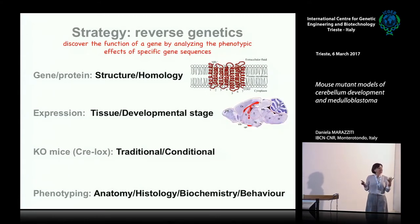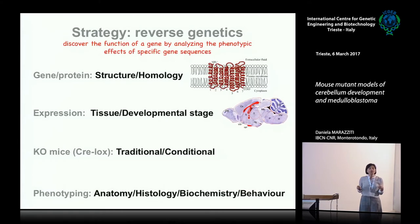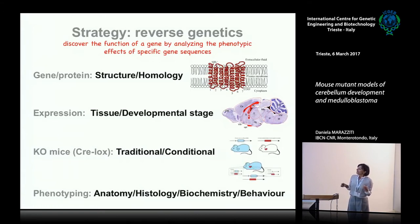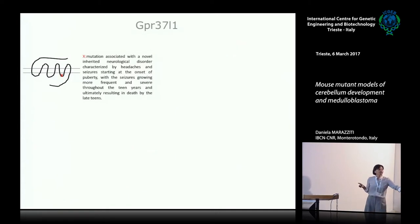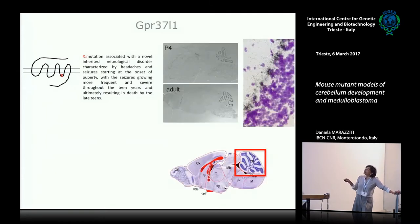We know that this receptor was expressed in the brain, and especially in the cerebellum. We generated a knockout mouse using the Cre-lox strategy, which is quite historical but still has a lot of value, especially when you want to generate conditional mouse strains. The gene we are interested in is an orphan G-protein coupled receptor, and although the gene was cloned nearly 20 years ago, today there is no clear ligand for this receptor. There are many claims, but there is a lot of controversy. The only known mutation is a very rare one located in the internal loop that causes seizures.